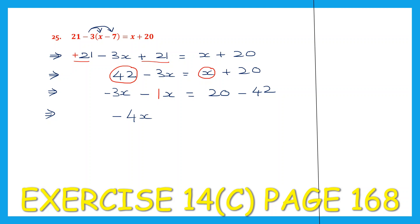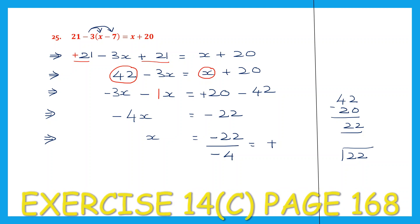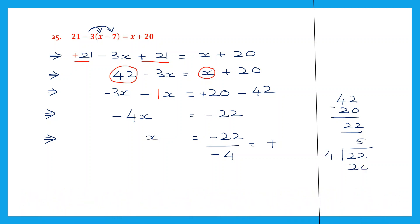So 4x is equal to 20 minus 42. Signs are different, so we put the sign of the bigger number and we subtract. 42 minus 20 is 22. So 4x equals minus 22. So the value of x will be minus 22 divided by minus 4. Minus into minus is plus. Now we have to divide 22 by 4. 4 5s are 20, remainder 2.